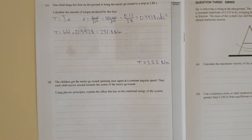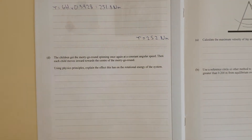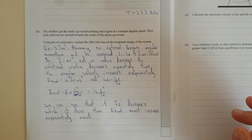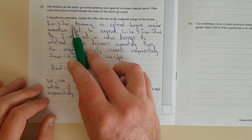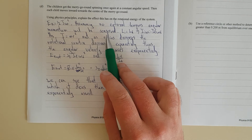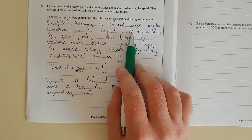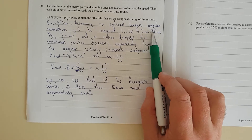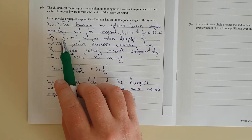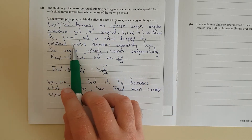The children get the merry-go-round spinning once again at a constant angular speed, then each child moves inwards towards the centre. Use physics principles to explain the effect on the rotational energy of the system. Assuming no external torques, angular momentum is conserved: I_initial × ω_initial = I_final × ω_final. Since rotational inertia is I = MR², as the radius decreases, the rotational inertia decreases.